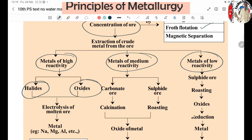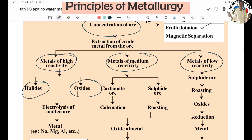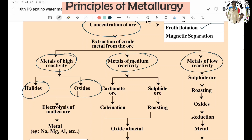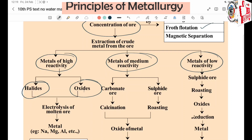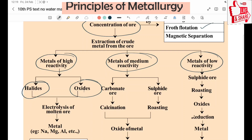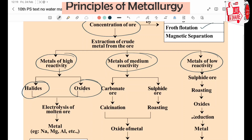Aluminium Halide. Magnesium Oxide, Aluminium Oxide, Sodium Oxide — these are oxide forms of metals. Chlorine, Iodine — Halide Ores. Oxygen — Oxide Ores.